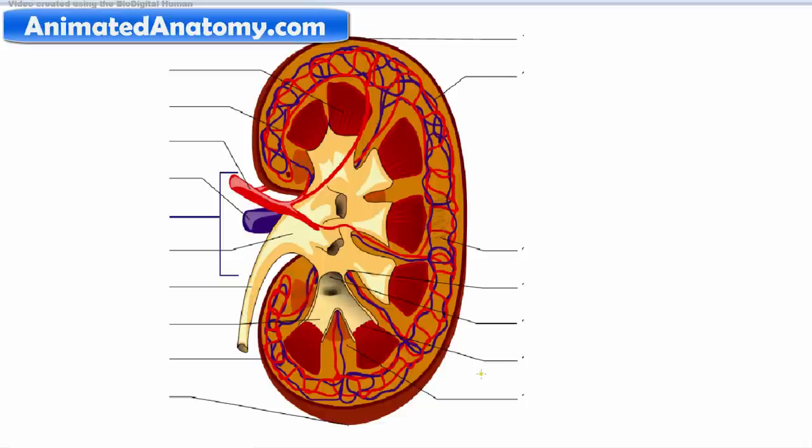The renal cortex is the part of the kidney where the ultrafiltration occurs and also erythropoietin is produced.